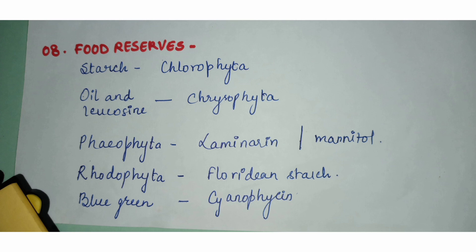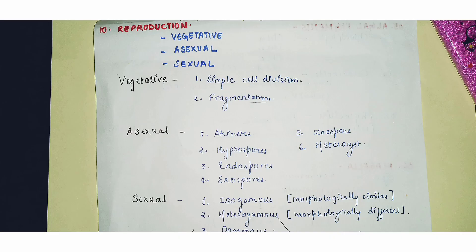Rhodophyta stores food as floridean starch. Blue-green algae store cyanophycean starch. The Chrysophyta group stores oil and leucosin as food reserves. These names vary according to the pigment present in each particular algal form.